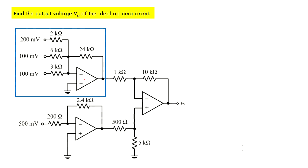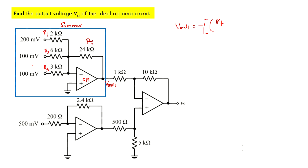For op-amp 1, the three input voltages — 200 millivolts, 100 millivolts, and 100 millivolts — are given through resistors connected to the inverting terminal of the op-amp. So this circuit acts as an op-amp summer. We need to add these three inputs considering their resistor weights. Let me label this as Rf, this as R1, R2, and R3, and the inputs as V1, V2, and V3.